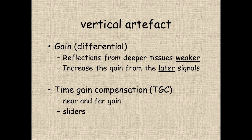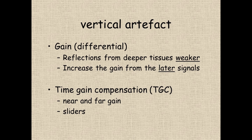Vertical artefact commonly arises because reflections from deeper tissues are weaker in nature. In many machines there is a facility to increase the gain from signals coming back from later or deeper tissues, to try and make a more uniform, higher quality picture. This is known as time gain compensation. On simple machines there is a straightforward near and far gain button; on advanced machines there are sliders that allow you to adjust the amplification of returning echoes from very specific depths in the tissue to improve image quality. Experienced ultrasonographers will spend a lot of time adjusting time gain compensation settings to get the best picture they possibly can.